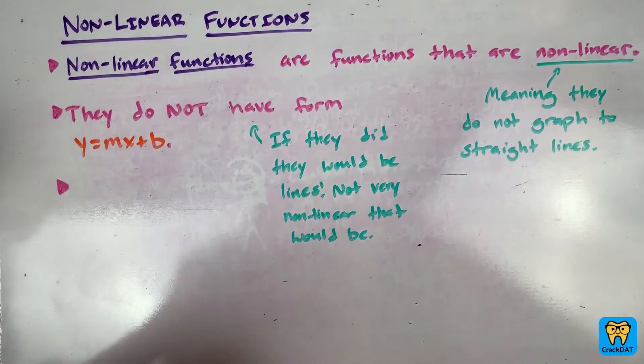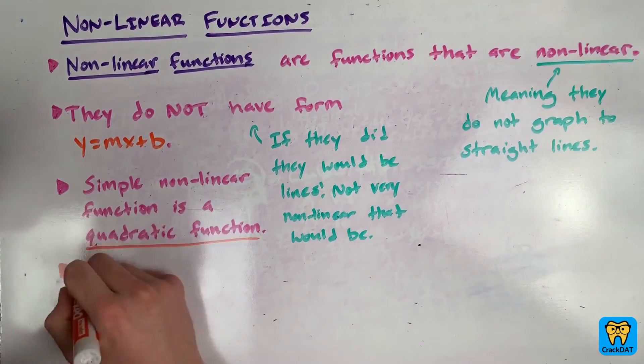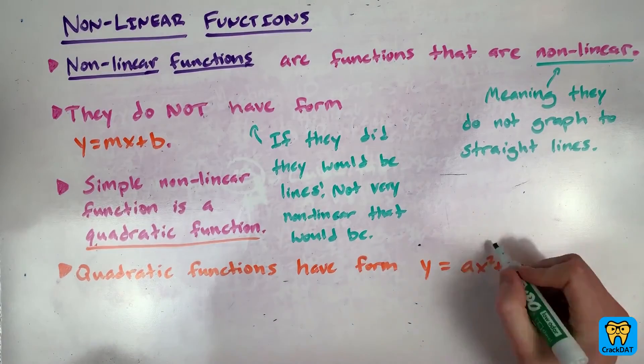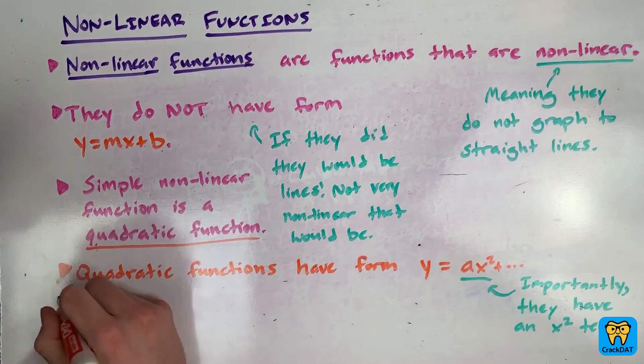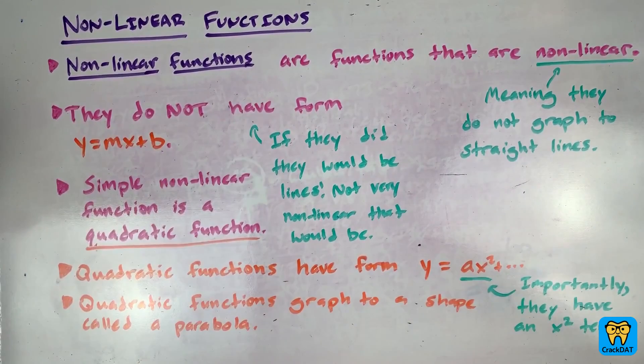The simplest example of a nonlinear function is something called a quadratic function. A quadratic function is a function with an equation that looks like y equals something with an x squared term in it. We call the shape that a quadratic function graphs to a parabola.